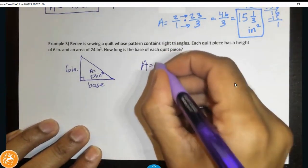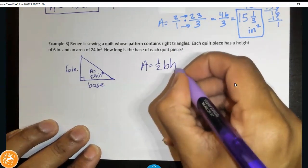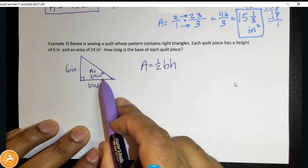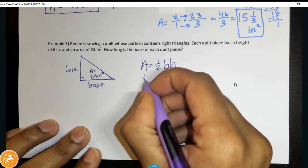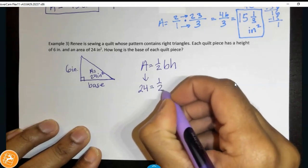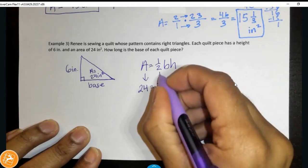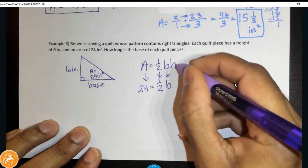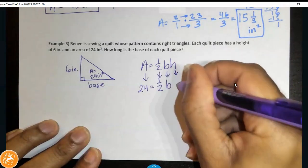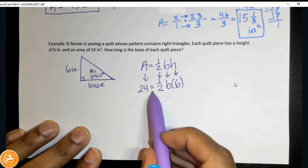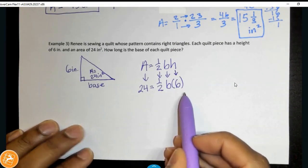So, I know area is equal to one half base times height. So, we're going to go ahead and plug in what we know. I know that the area is 24, so I'm going to plug in 24. One half stays there. I don't know the base. Base is what's missing. The height is 6.